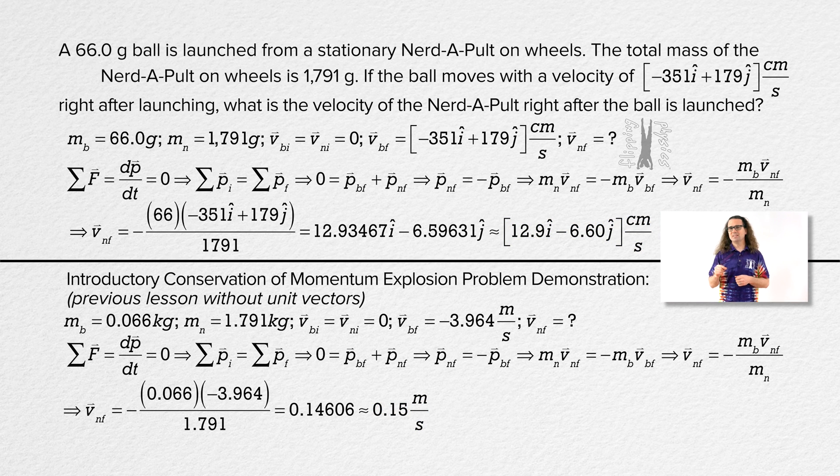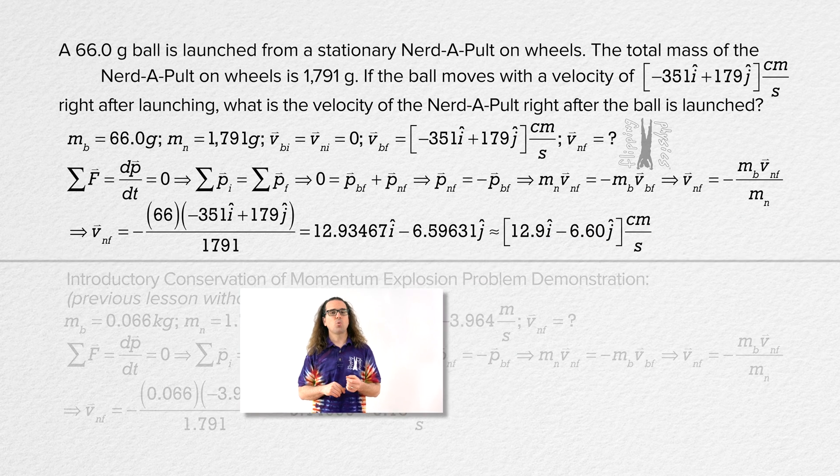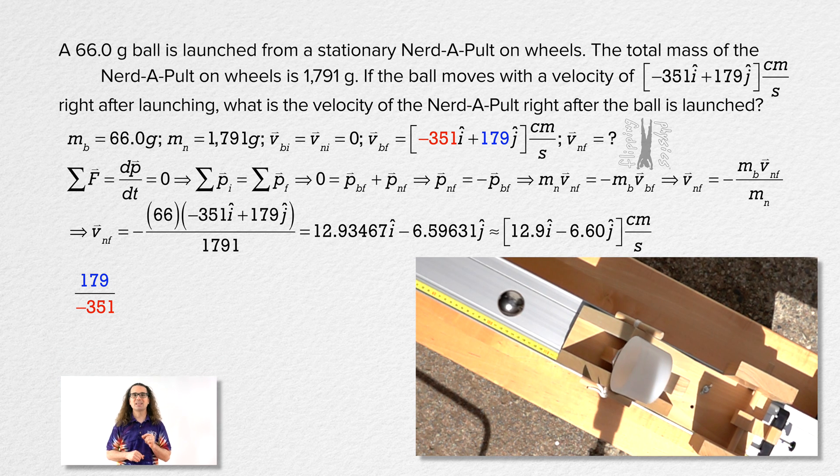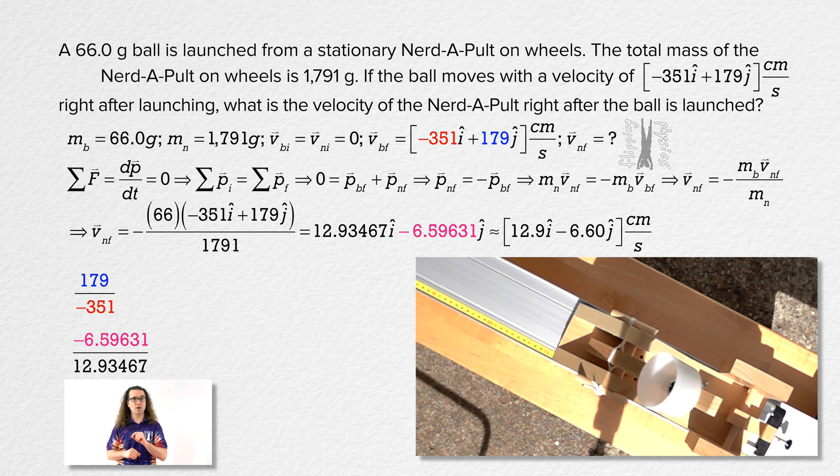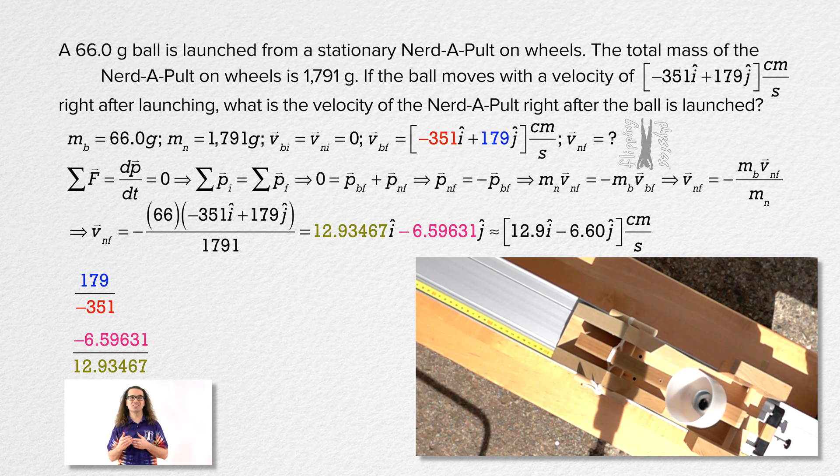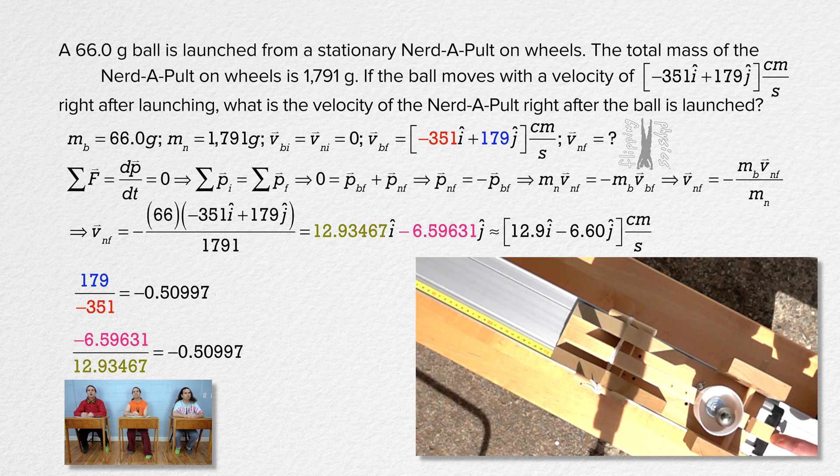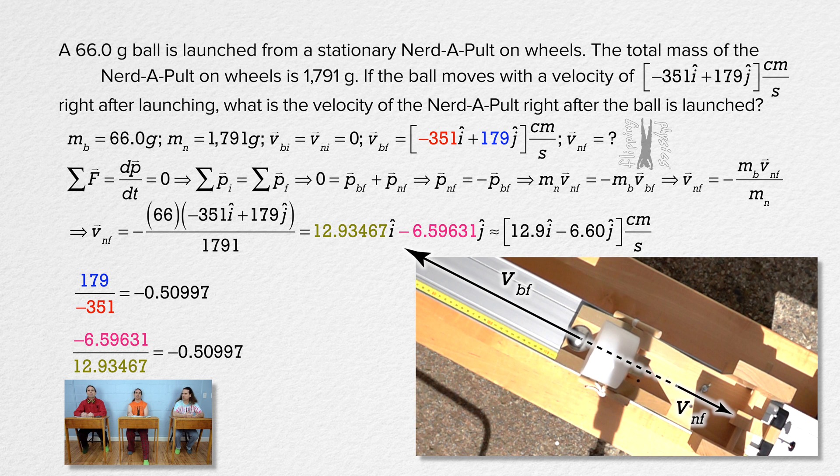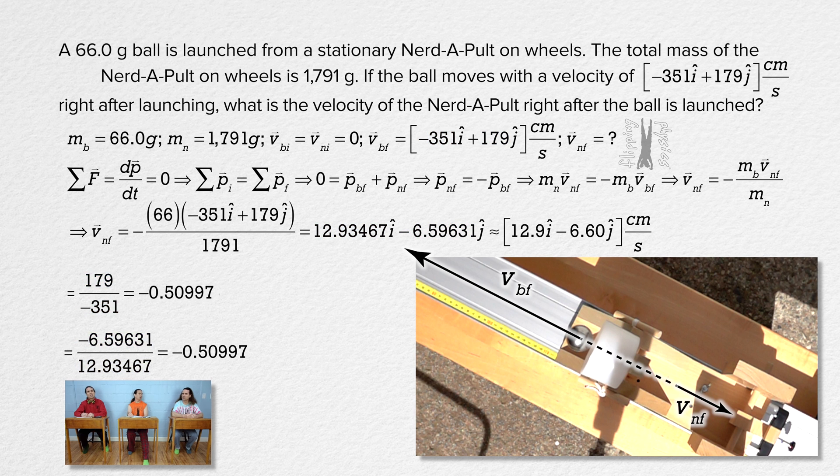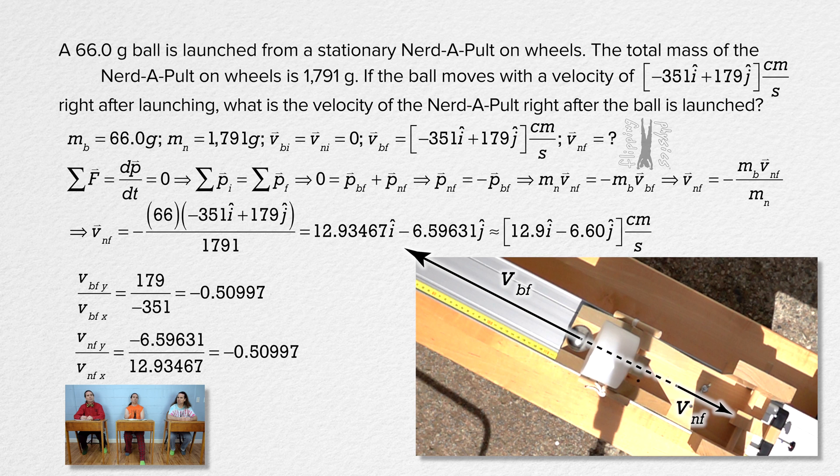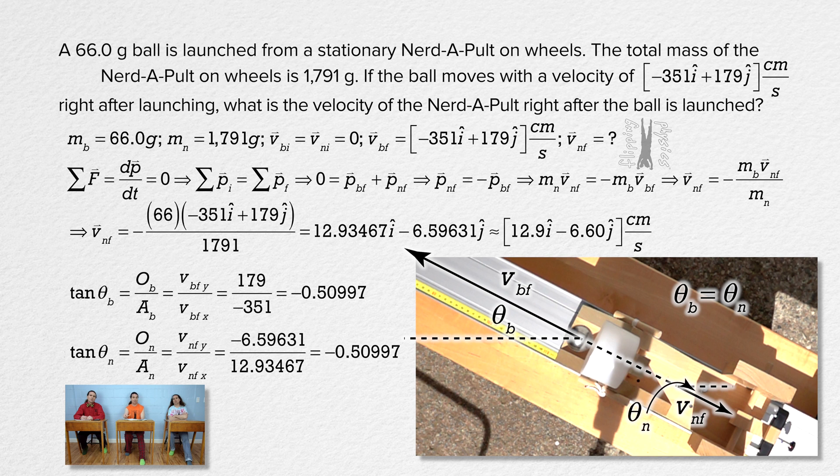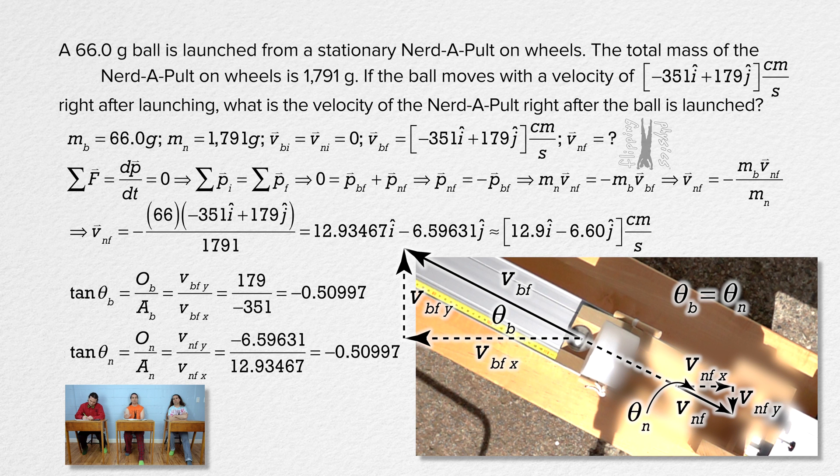Okay, I have a question. Why is it that when we take the ratios of the y and x velocity finals of the ball and the Nerdapult, we get the same number? In other words, why are 179 over negative 351 and negative 6.59631 over 12.93467 both equal to the same number? Because they are moving in opposite directions. Sure, but why would that mean the ratios of their y and x final velocities equal the same number? Because they are both moving at the same angle relative to the x direction, therefore the tangent of the angle which describes both of their final velocities, which equals opposite over adjacent, equals the same thing.